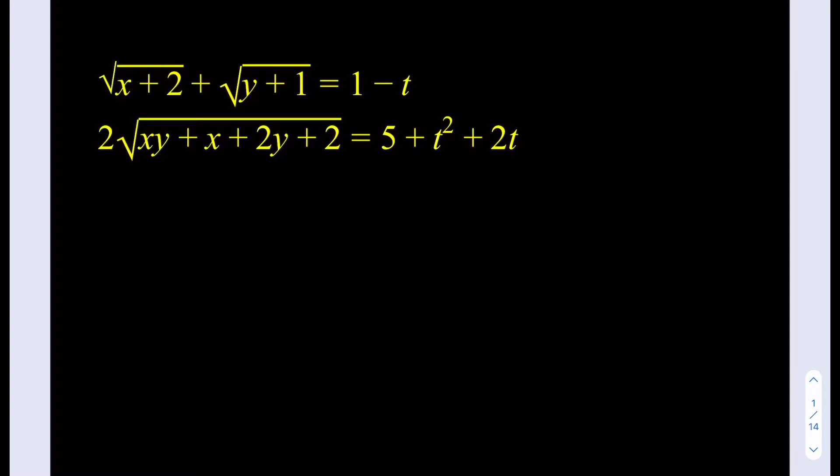We have the system: the square root of x plus 2, plus the square root of y plus 1, is equal to 1 minus t. And then we have another radical expression being equal to 5 plus t squared plus 2t. So t is kind of like a parameter here; we're just going to be looking for all possible real solutions.